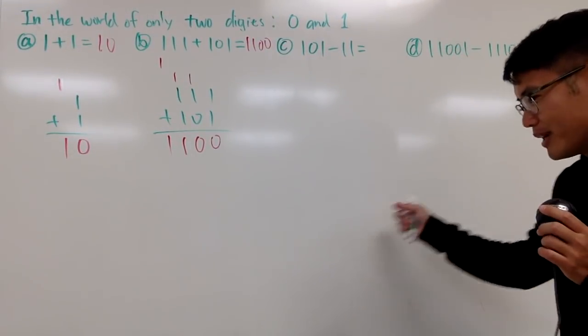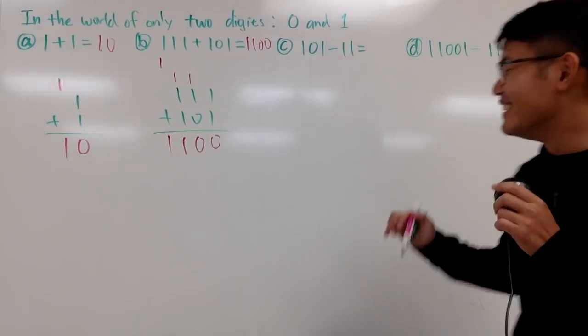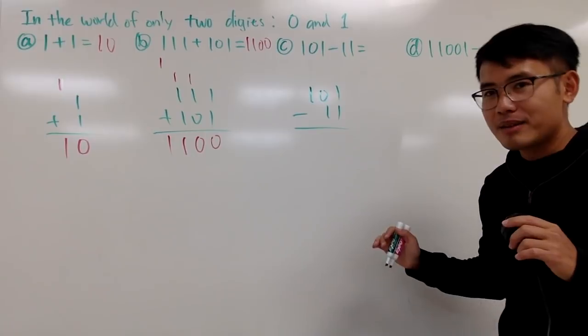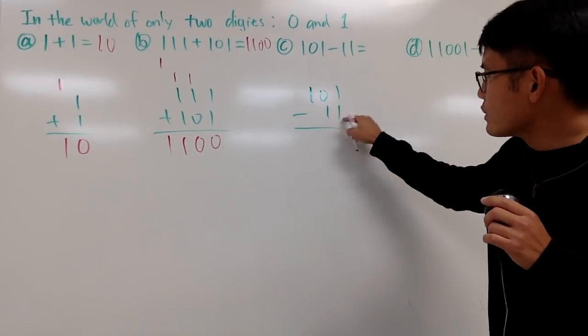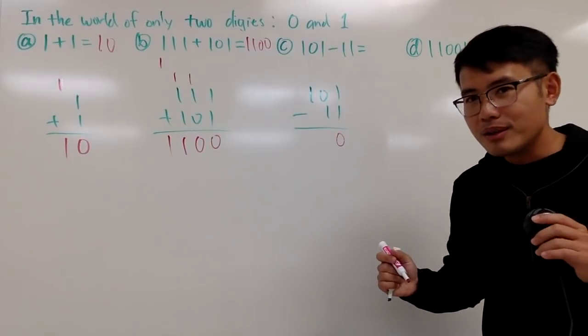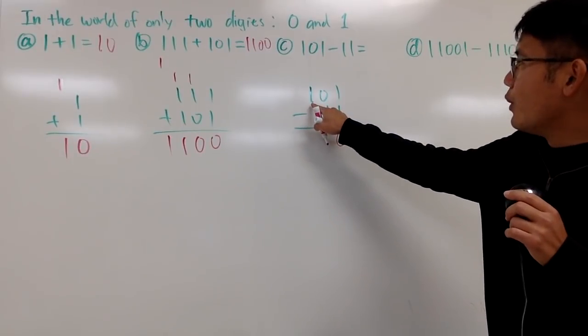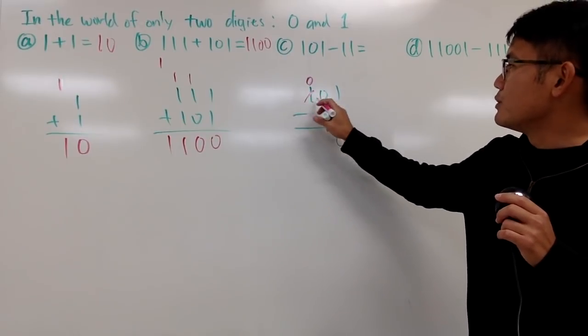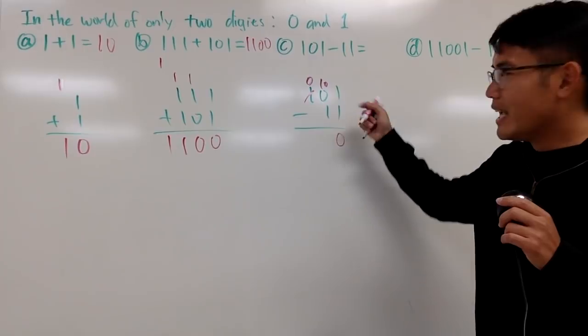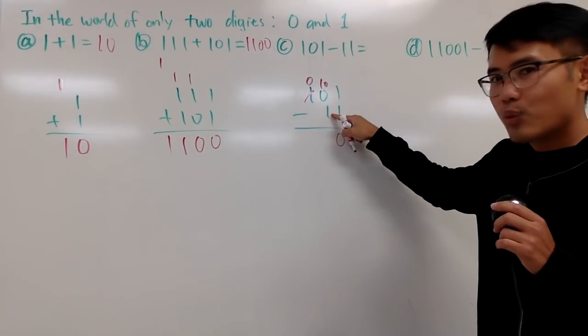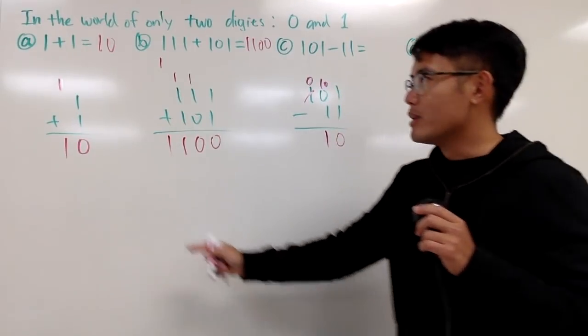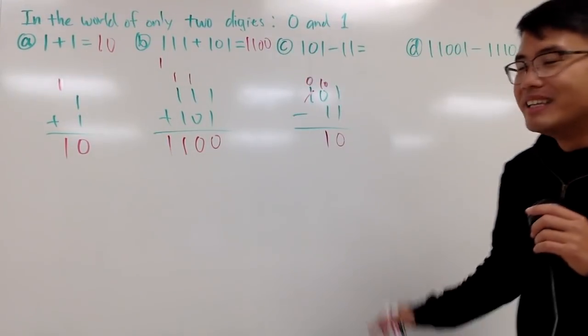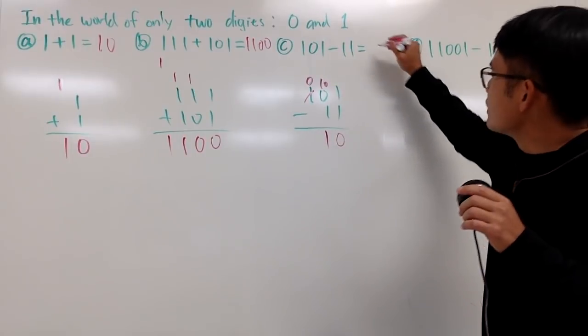So here, we have 101 minus 11. We have to line up the numbers to the right. And now, let's see. 1 minus 1, this is 0, okay? We don't have to argue anything. Now, 0 minus 1, I cannot do it. So I have to borrow, so I have to get rid of this. This becomes 0, so this is technically 10. 10 minus 1 is 1. Why? Because we have this: 1 plus 1 is 10. So 10 minus 1 is 1. So the answer to this right here is 10.